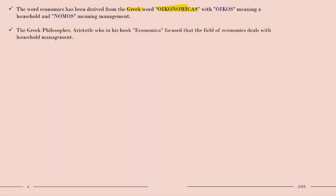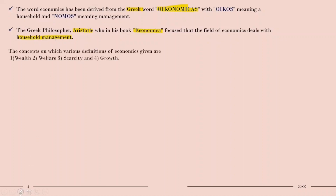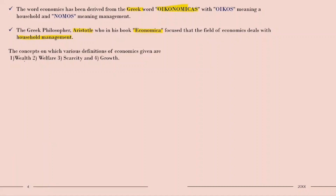The first one to talk about economics was Greek philosopher Aristotle. He wrote a book called Economica, in which he mentioned that economics deals with household management. Then many people came and gave definitions for economics — first was the wealth definition, then welfare, then scarcity, then growth. These definitions kept evolving from time to time.